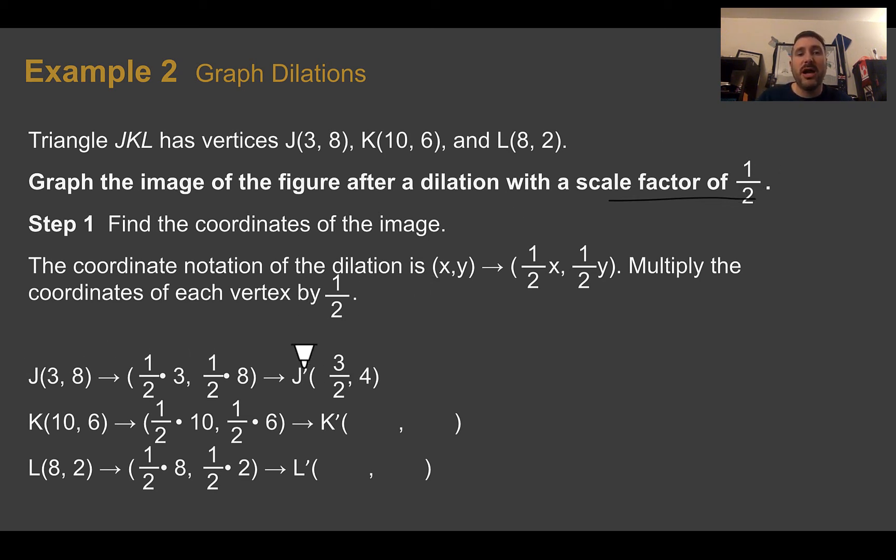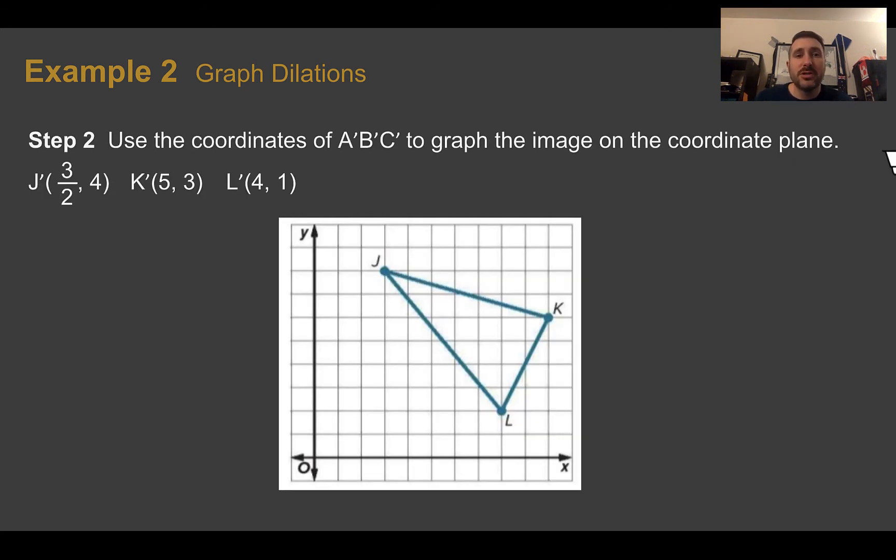So let's multiply each coordinate by that scale factor. J times 1 half would give us J prime, which is 3 halves and 4. 3 halves is really just 1.5. K, which was 10, 6, multiplied by half for K prime will be 5, 3. And then L, which was 8, 2, to give us L prime of 4 and 1. So now let's graph those points to see what our dilation looks like. So 1 and a half and 4 would be about here. So K prime would be about there. L prime would be at 4, 1. And we can see that everything is half as far away from the origin, which we dilated it from, compared to where it was originally.